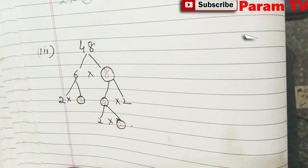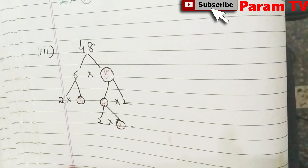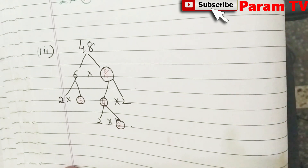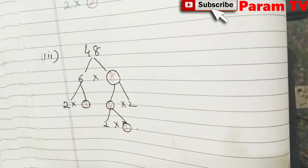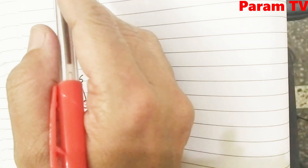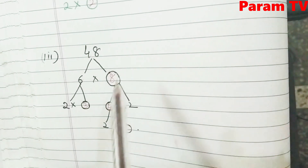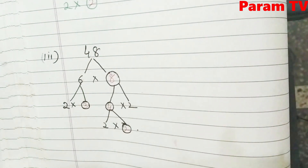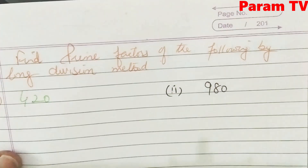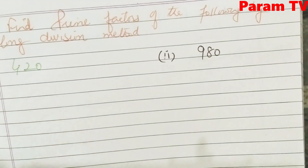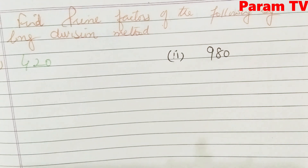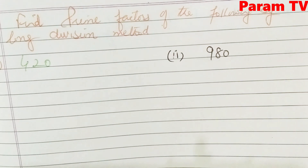This is given. Otherwise, the factor trees we build are different — there we start from prime numbers and work our way through. Next, third question: find the prime factors by long division method.